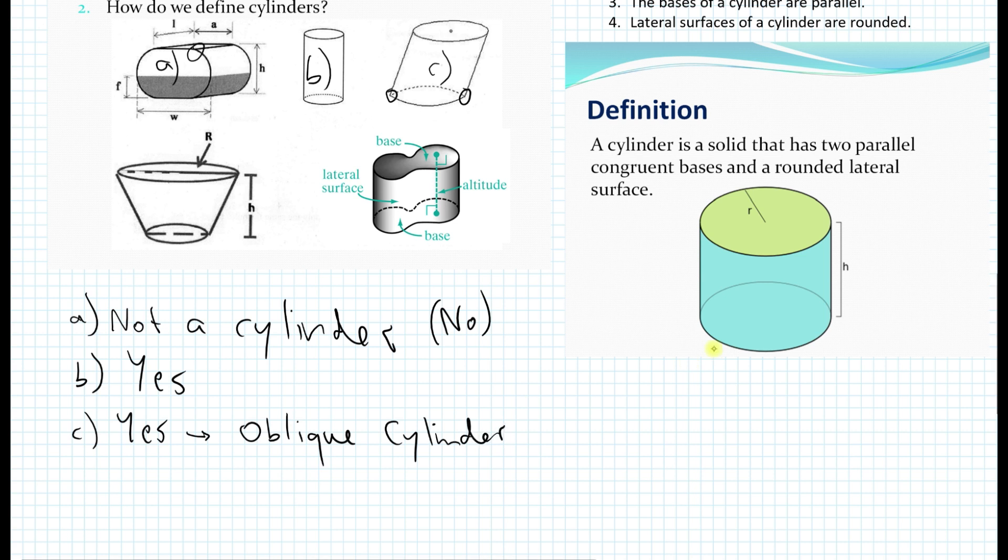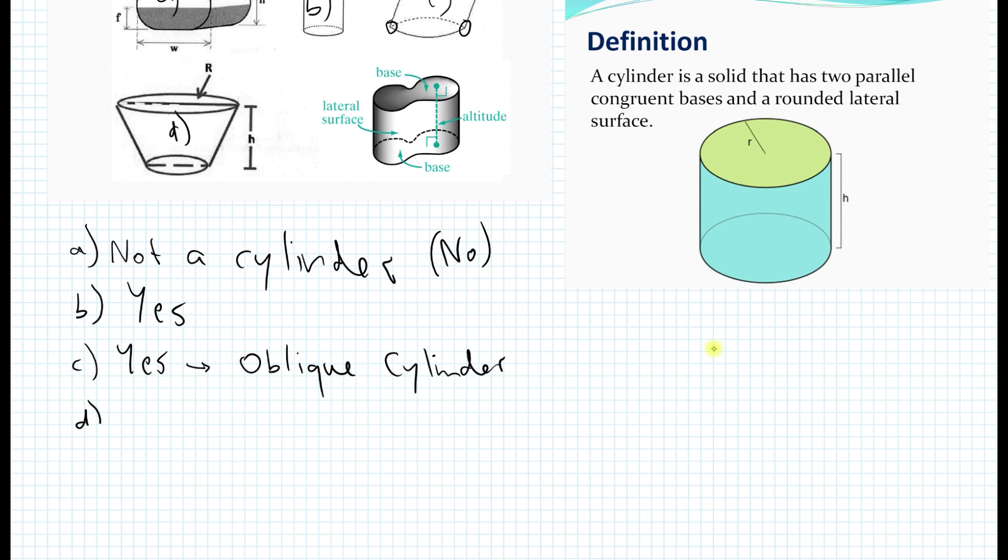So here we don't need to even say that the cylinder is regular or not, because in this particular case, we are going to call the cylinder according to its base. But we'll get into detail a little later. What about D? Is that a cylinder? Well, the answer is no. And why not? Because for part D, we have parallel bases, but the bases are not congruent.